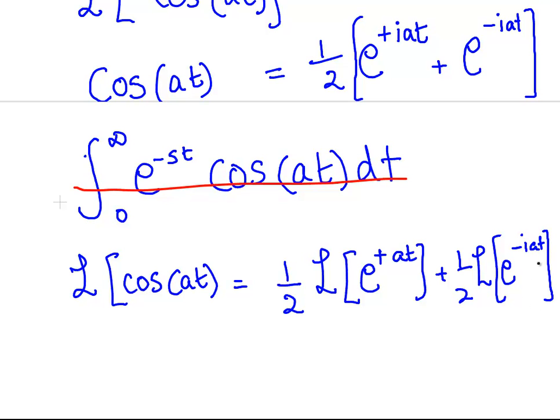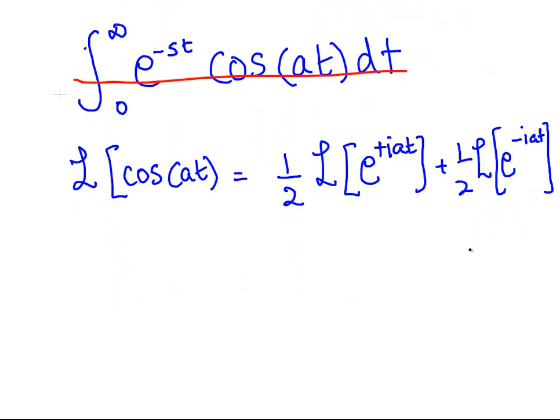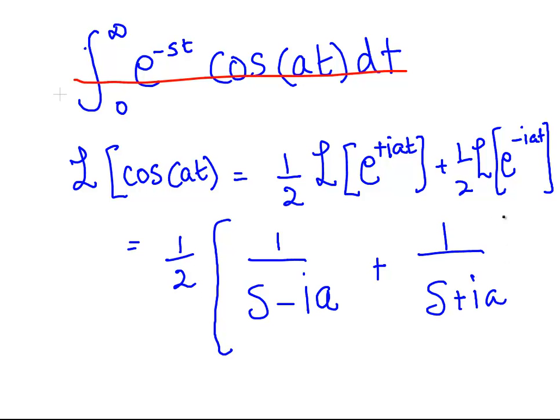The thing about this is it doesn't really matter that we have a complex term there. a can be a complex number. a is allowed to be a complex number. So what is that? Using the evaluations we have already, it's half of, I'll just keep the half on the outside altogether just for the sake of space. That is 1/(s-ia) plus 1/(s+ia).